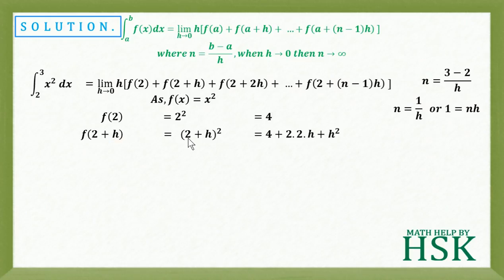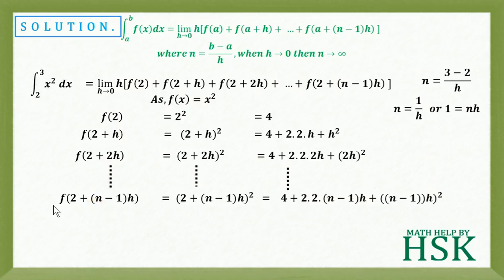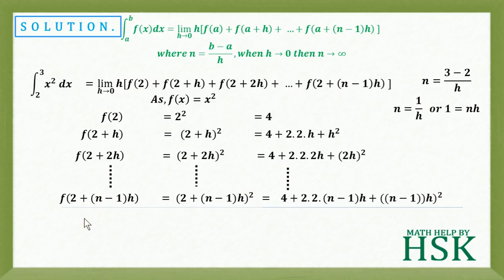Similarly, f of 2 plus 2h equals 2 plus 2h whole squared equals 4 plus 2 times 2 times 2h plus 2h whole squared. And the last term f of 2 plus n minus 1 into h equals 2 plus n minus 1 into h whole squared, which equals 4 plus 2 times 2 times n minus 1 into h plus n minus 1 into h whole squared.